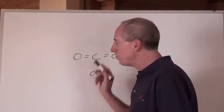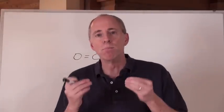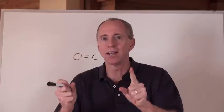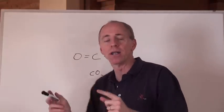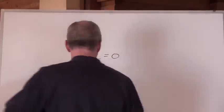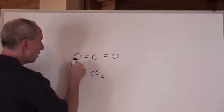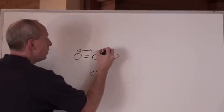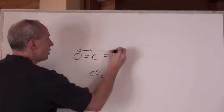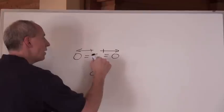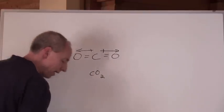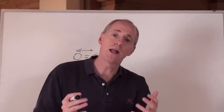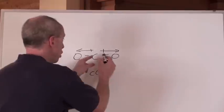Does this molecule have bonds that are polar? Absolutely. What do we call a polar bond? Well, because there's two poles here — the oxygen on the periodic table is more electronegative than carbon. So we draw an arrow from the carbon to the oxygen. This is the more partially positive end, and these ends are more partially negative. So this has two poles, we call it a dipole. Does this molecule have dipoles, or polar bonds? You bet it does.